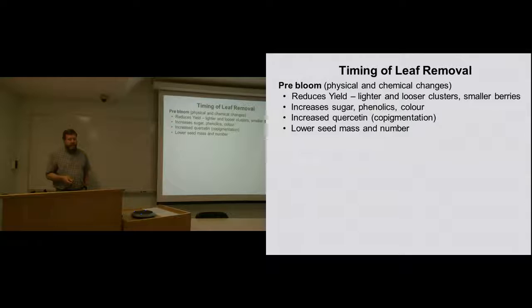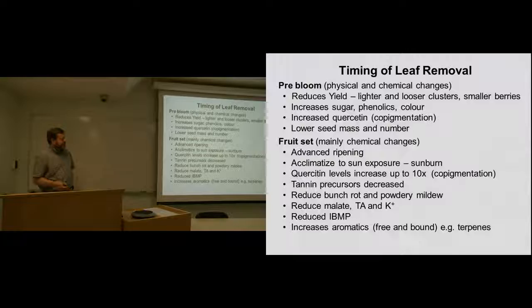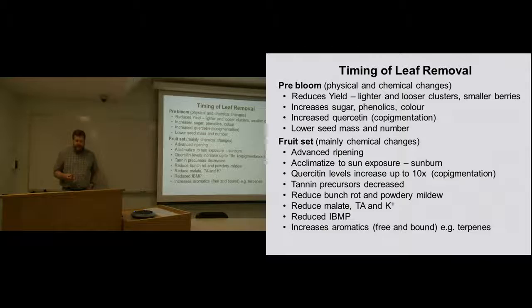When we looked at the difference between sprawl and VSP for some of the basic composition, there were no differences really between TA, pH and soluble solids. But when we looked at the tannin content, we found that the seed tannin here, this is percent dry weight from Merlot and Cabernet Sauvignon. When we have VSP and sprawl and then we have the light blue is early tipping and the dark blue is late tipping. We have higher amounts of seed tannin when we have sprawl canopies, and there's no difference between the tipping treatments. We see that with skin tannin as well in the Merlot, but we didn't see that result with the Cabernet Sauvignon.